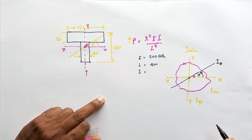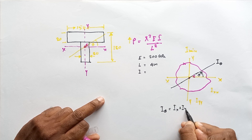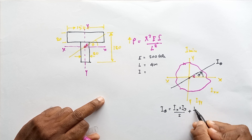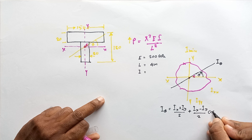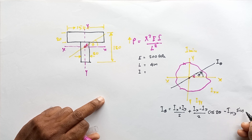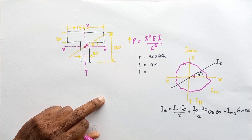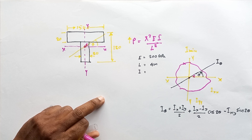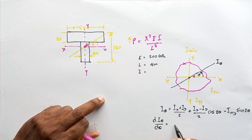Around the XX axis take I_xx, around the YY axis take I_yy. For any axis inclined at angle θ to the positive X axis, the second moment of area I_θ is given by: I_θ = (I_x + I_y)/2 + (I_x − I_y)/2 · cos2θ − I_xy · sin2θ. Here I is a function of θ. To find the minimum I value, we differentiate with respect to θ and set dI_θ/dθ = 0.